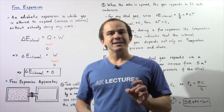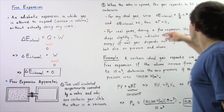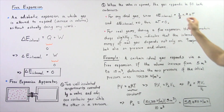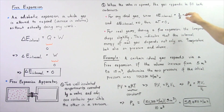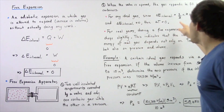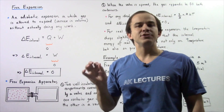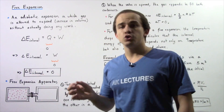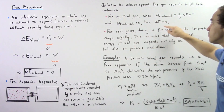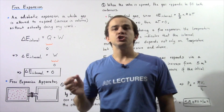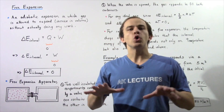Recall that for any monatomic ideal gas, the change in internal energy is equal to (3/2) × N × R × ΔT, where N is the number of moles of gas, R is the ideal gas constant, and ΔT is the change in temperature. So in any ideal gas, the change in internal energy only depends on the change in temperature. Because in a free expansion the change in internal energy is zero, that implies the change in temperature is also zero — for any ideal gas undergoing a free expansion, there is no temperature change.